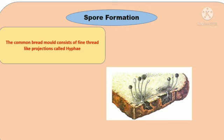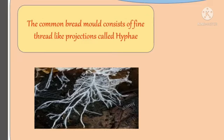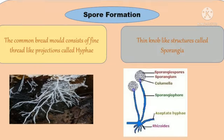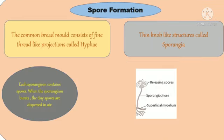Spore formation: the common bread mold consists of fine thread-like structures called hyphae and thin knob-like structures called sporangia. Each sporangium contains spores. When the sporangium bursts, the spores disperse in the air.